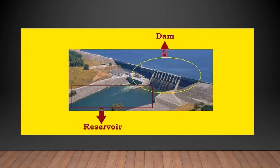We use some water from the rivers, but what is not used flows by. To make efficient use of water we build dams. Dams stop the flow of water and the stopped water is stored in huge reservoirs. We need water every day, so the water has to be stored and used later. Artificial lakes or storage dams are built by constructing walls across the river to keep the water in.